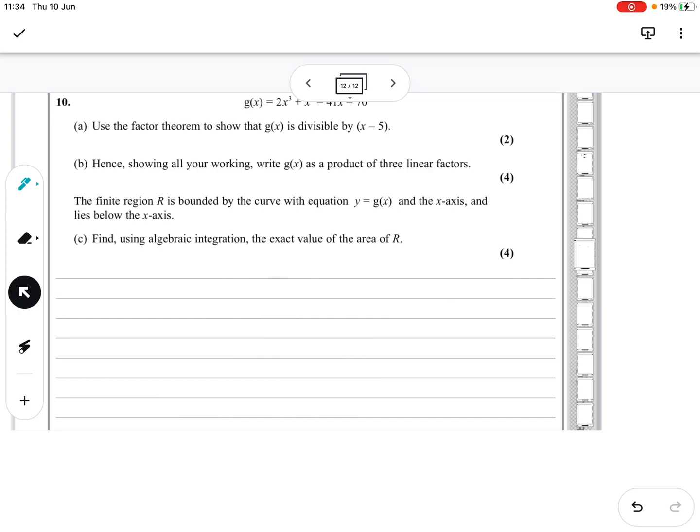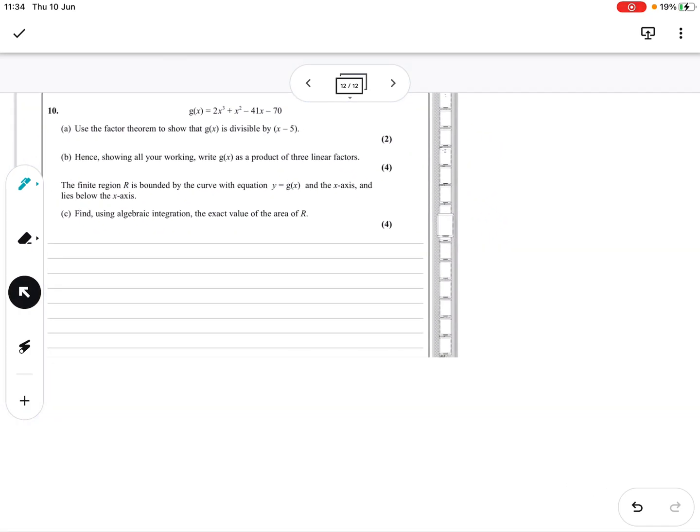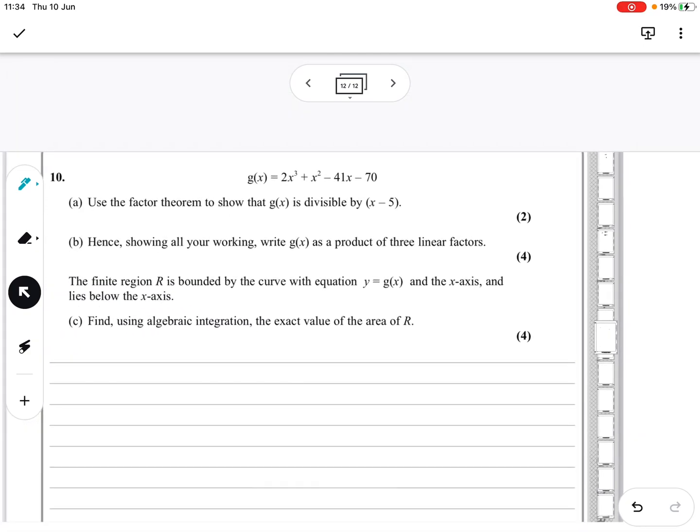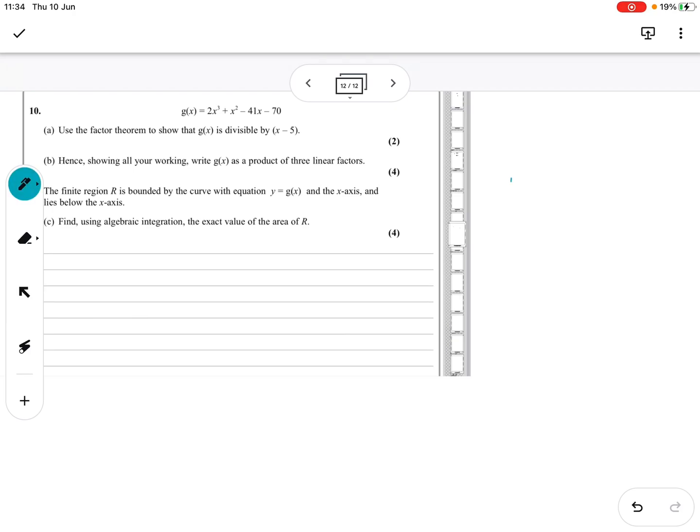Right, here we are, October 2020, and this is question 10 of the AS paper 1, pure paper. As you can see, it's just a factor theorem for the very first bit, two marks, classic factor theorem question.